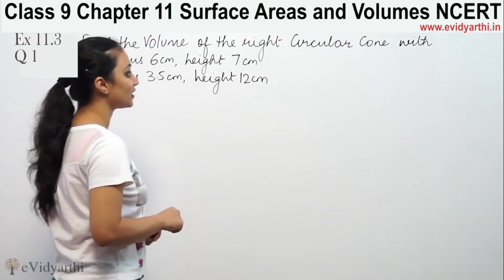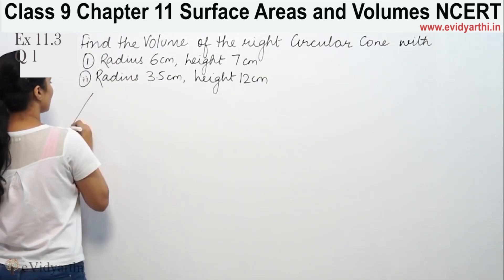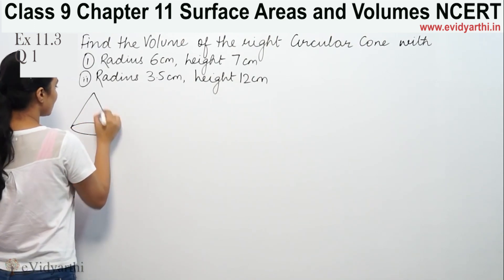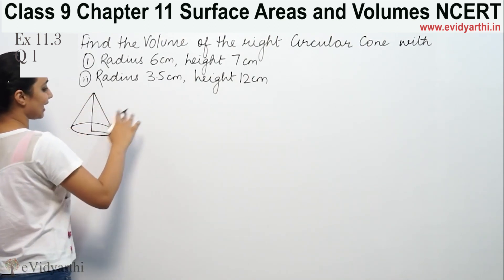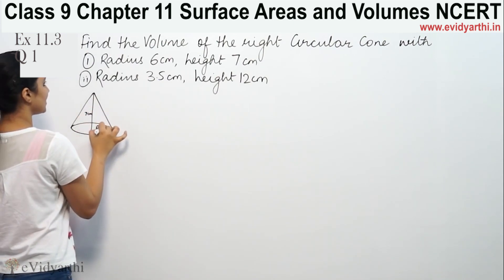This says find the volume of the right circular cone with radius 6cm and height 7cm. A right circular cone, when it comes to vertical height, that means it is straight. So height is 7 and radius is 6cm.